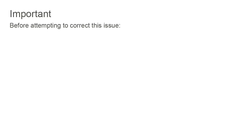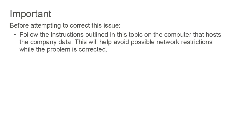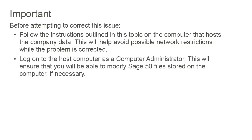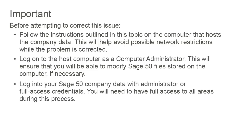Always create a backup of your Sage 50 company data before proceeding with the advanced steps outlined in this topic. Before attempting to correct the issue, follow the instructions on the computer that hosts the company data. This will help avoid possible network restrictions. Log on to the host computer as a computer administrator, and log in to your Sage 50 company data with administrator or full access credentials. You will need to have full access to all areas of the program during this process.